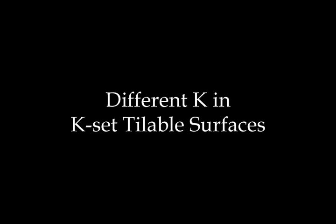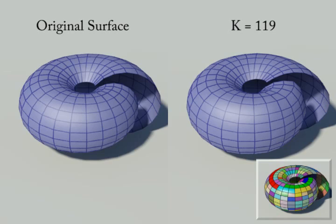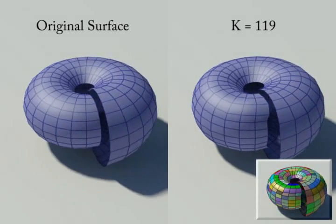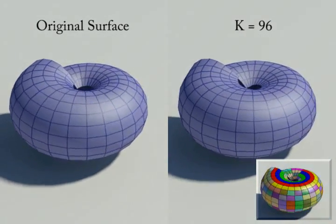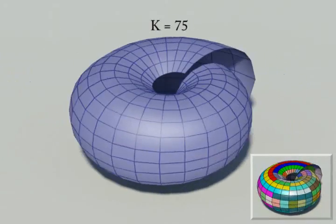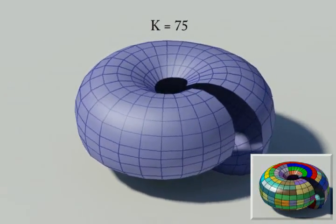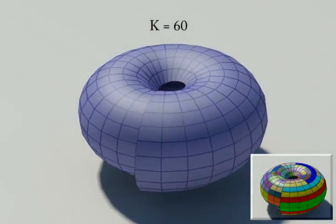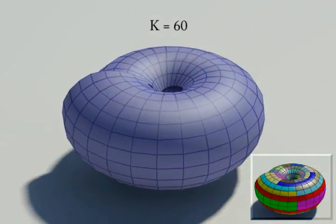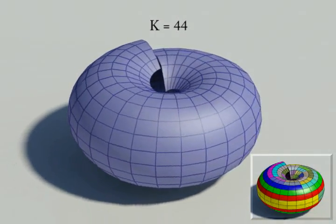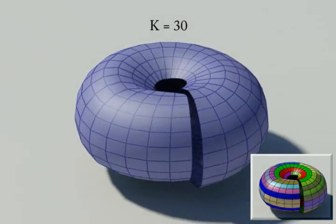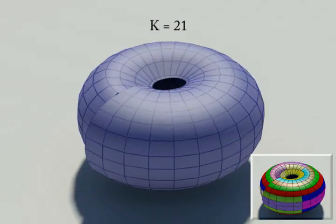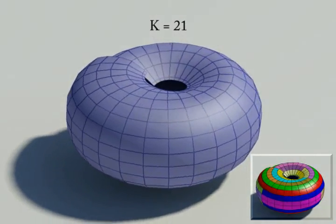Different k-set tileable surfaces in seashell: from k equals 119 to k equals 96, k equals 75, 60, 44, 30. With decrease in k, we can see that the opening of seashell gets smaller and smaller.